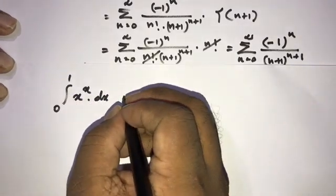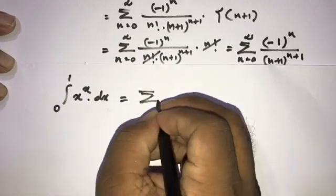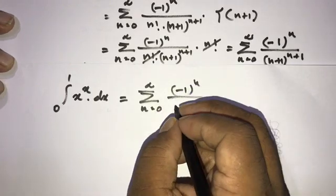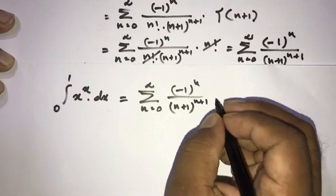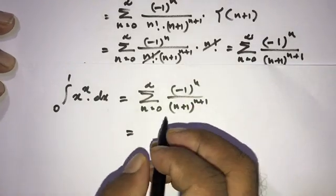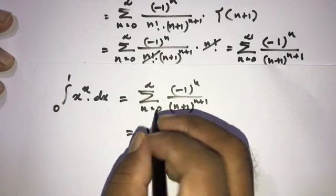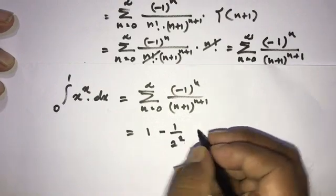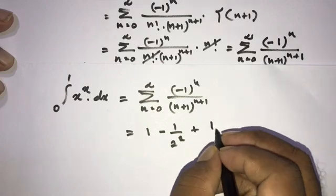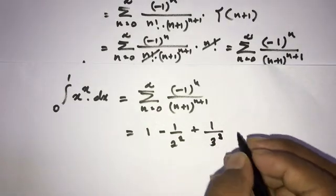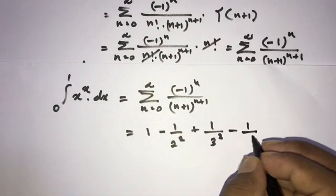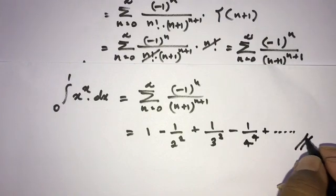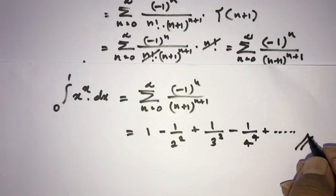So the answer is: the integral from 0 to 1 of x^x dx equals the sum from n=0 to infinity of (-1)^n over (n+1)^(n+1). Writing out the first few terms: when n=0, we get 1; when n=1, minus 1/2²; plus 1/3³; minus 1/4⁴, and so on. If you like this video, please subscribe to this channel. Thank you for watching.